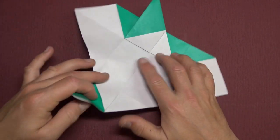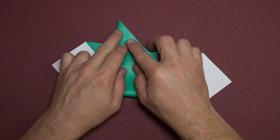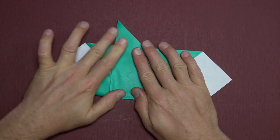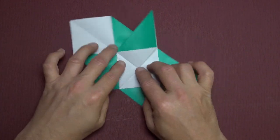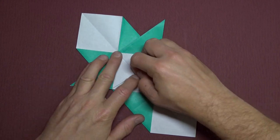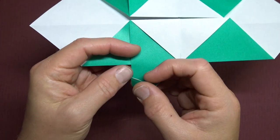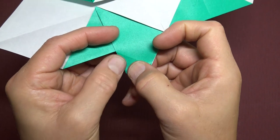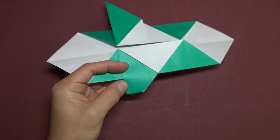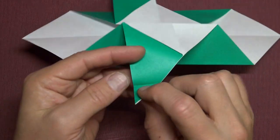And repeat. So fold the flap to here. And fold it back. Fold the corner to this point. Like that. Unfold.